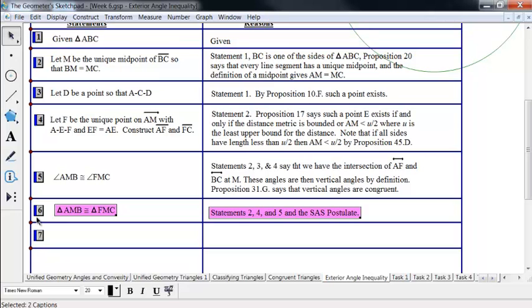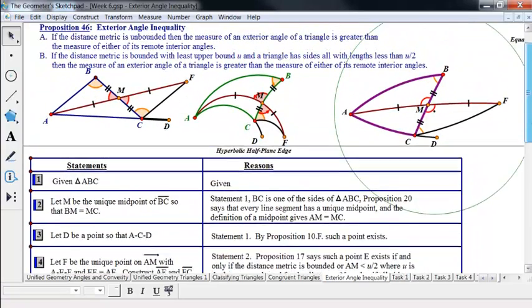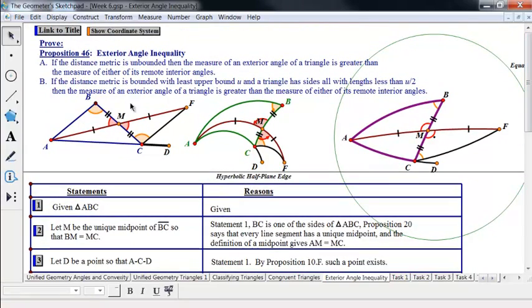And so we have some congruent triangles. AMB is congruent to FMC, and that's by the side angle side postulate. And notice I put what statements above gave me that hypothesis. And of course then corresponding parts of congruent triangles are congruent, or in other words, the definition of congruent triangles and the fact that we have some says that we have a pair of corresponding angles that are congruent, and this is what we're after while we did this construction.